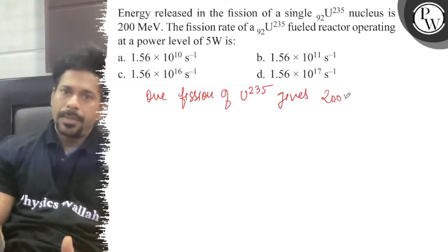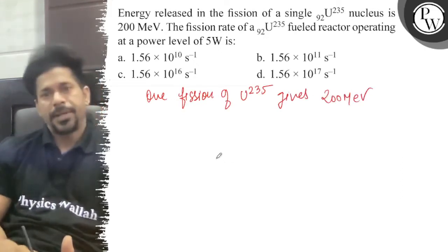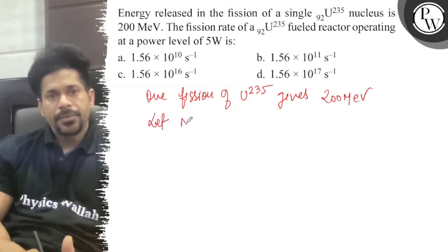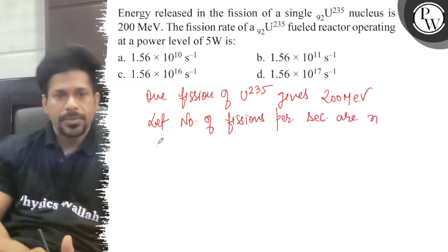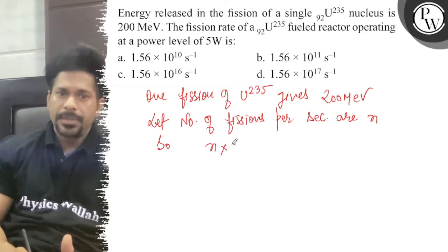200 mega electron volts. So let the number of fissions per second be small n. So small n times energy 200 mega electron volts